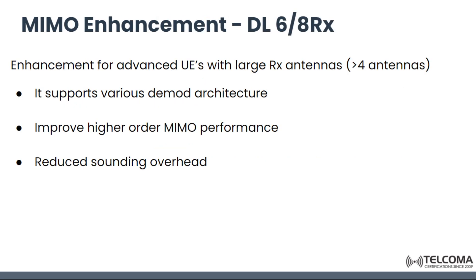Different configurations for MIMO enhancements include downlink 6 and 8 receiver enhancements for advanced user equipment with a large number of receivers — greater than four antennas. It supports various demodulation architectures, has improved higher order MIMO performance, and can reduce sounding overhead.